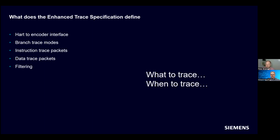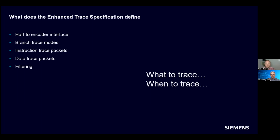Another way of minimizing the amount of trace data is by using filtering — specifying what to trace and when to trace. For example, you could trace a specified range of instruction addresses, or an address to start and an address to stop, or trace specific privilege levels or a range of contexts. Finally, the standard describes timestamping, so that when trace streams come from multiple harts — multiple processor execution units — you can coordinate that data to understand how the code is executing in different parts of the system.